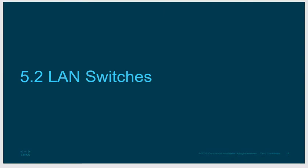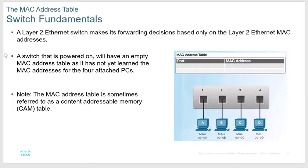A switch is a layer 2 device and makes all of its forwarding decisions based on layer 2. When a switch first starts up it has a MAC address table stored in what's called CAM — content addressable memory. The CAM is empty and waiting to learn MAC addresses. When PC A sends something to PC D for the first time, the switch records PC A's source MAC address and the port it came from.